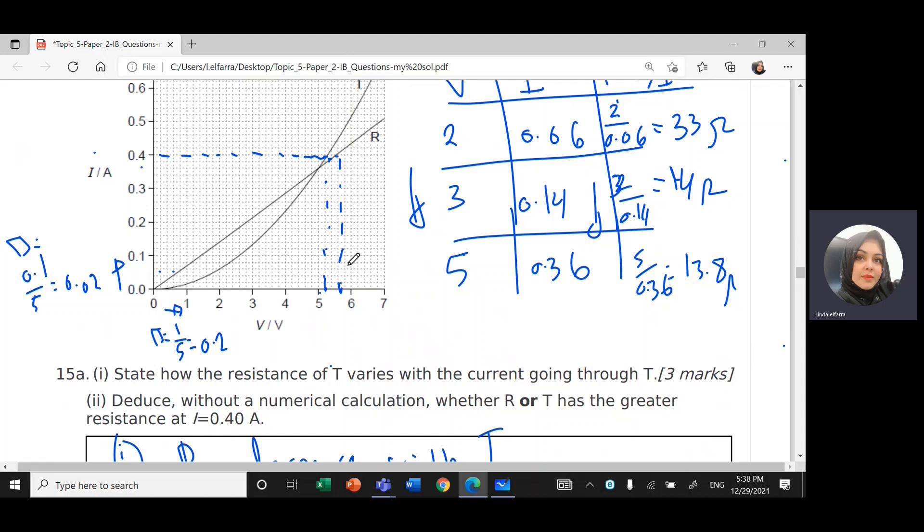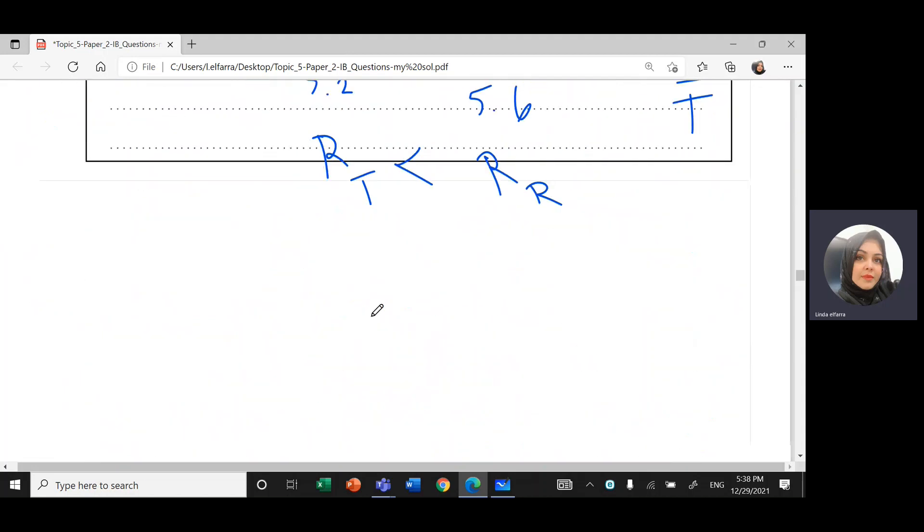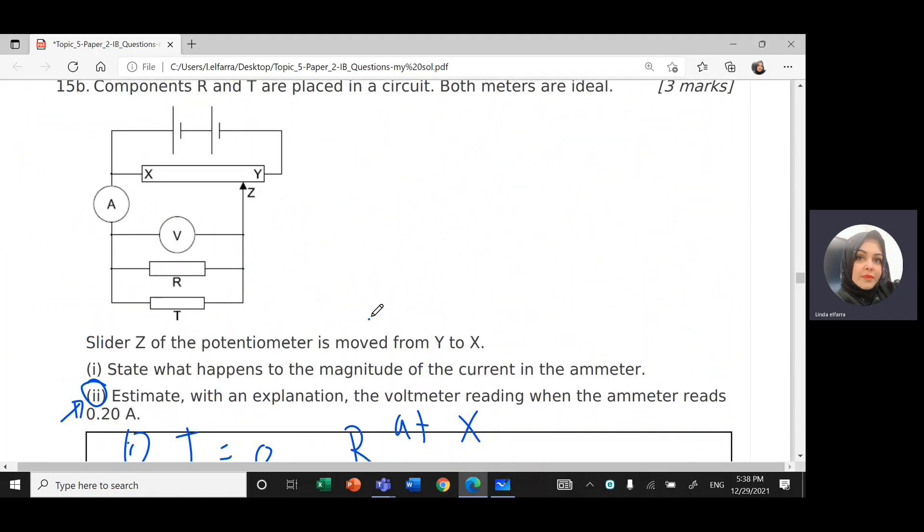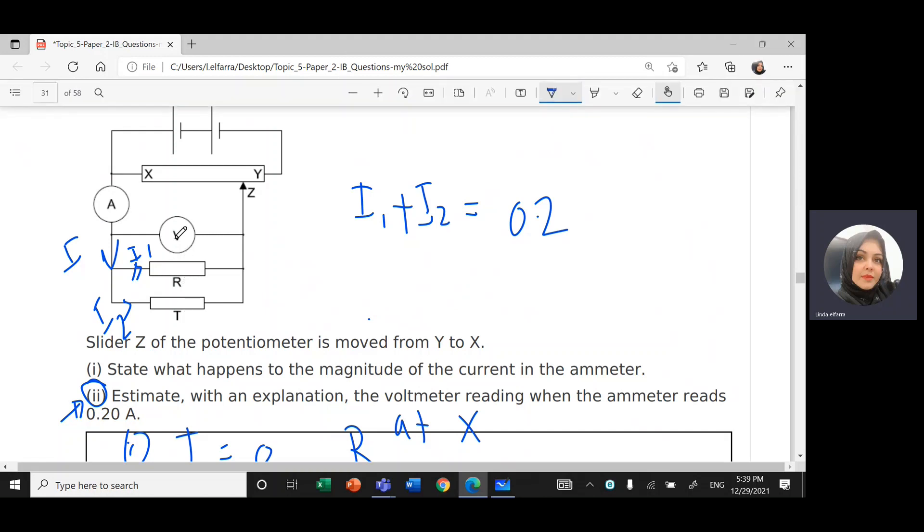I'm going to look for two values for the current because the total current, when it comes, when it passed through these two resistances, they're connected in parallel. So the total value of current I will be split to I1 and I2. If I add them, if I add I1 plus I2, I should get the value of 0.2.